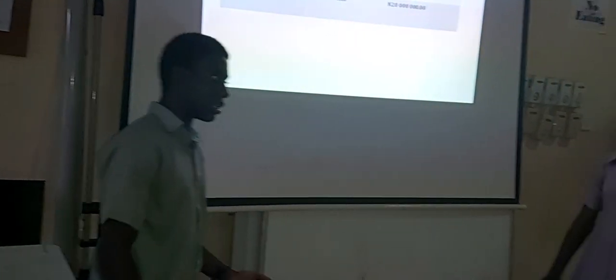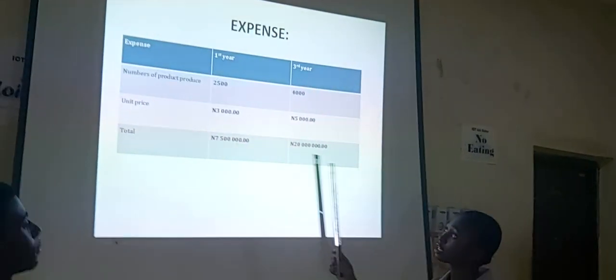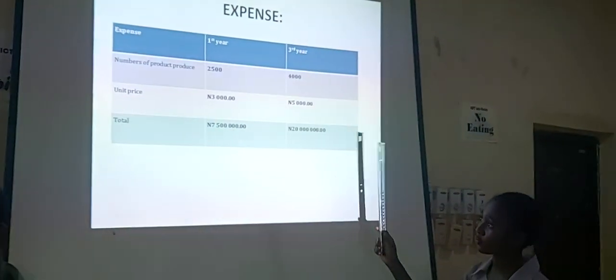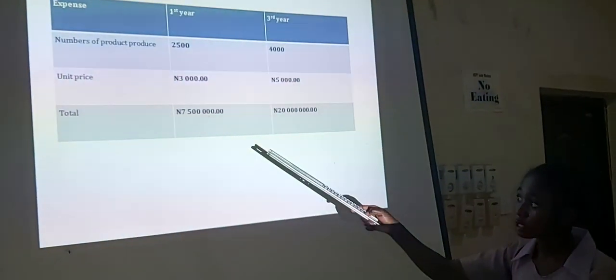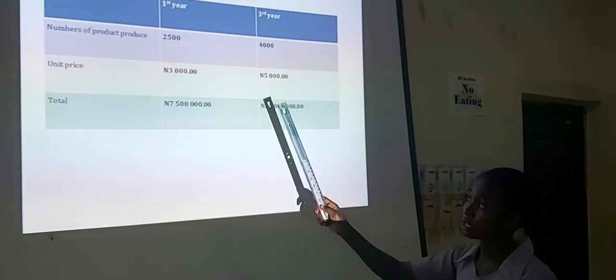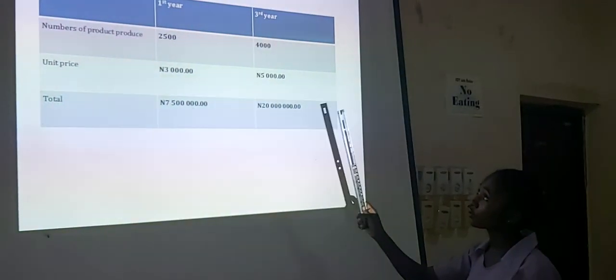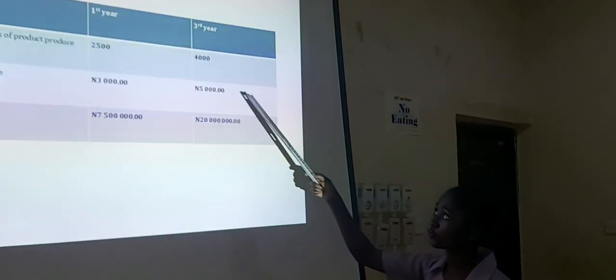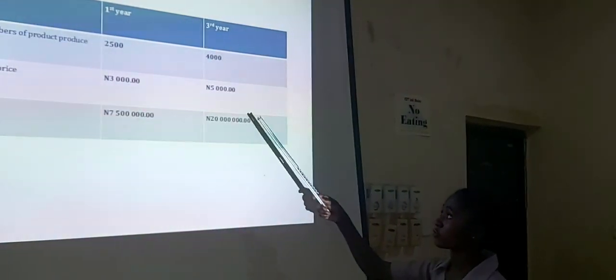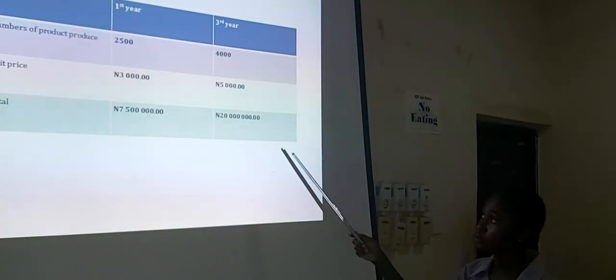Our financial analysis: the number of units for the first year, that's 2,500, will be sold at the unit price of 3,000 Naira, totaling 7.5 million Naira for the first year. By the third year, the number of products produced is 4,000 with a unit price of 5,000 and a total of 20 million Naira.